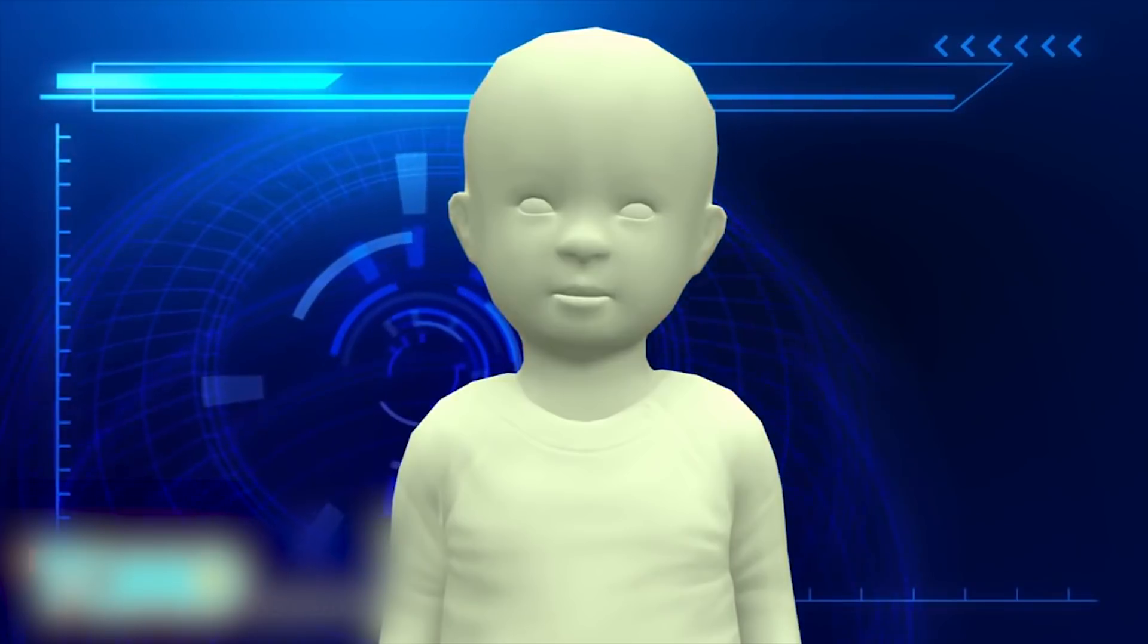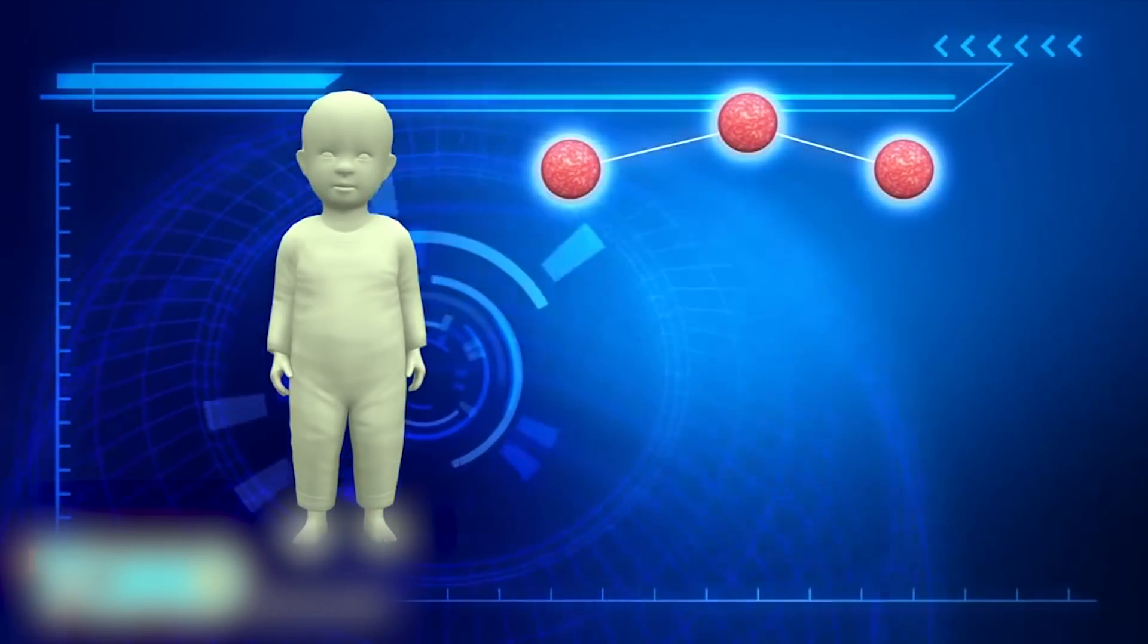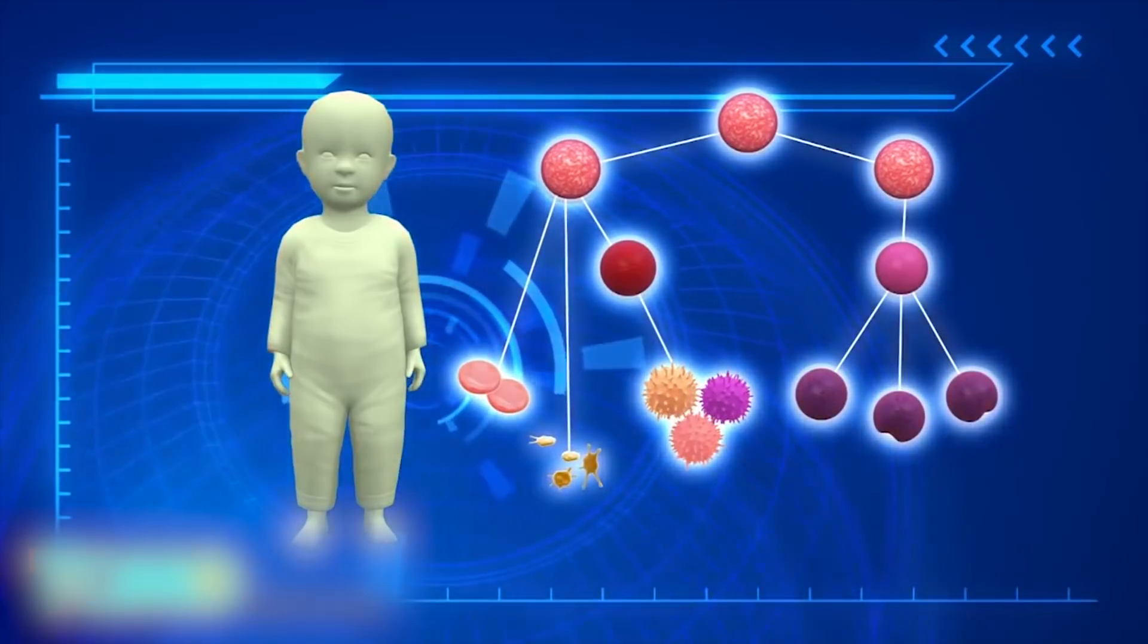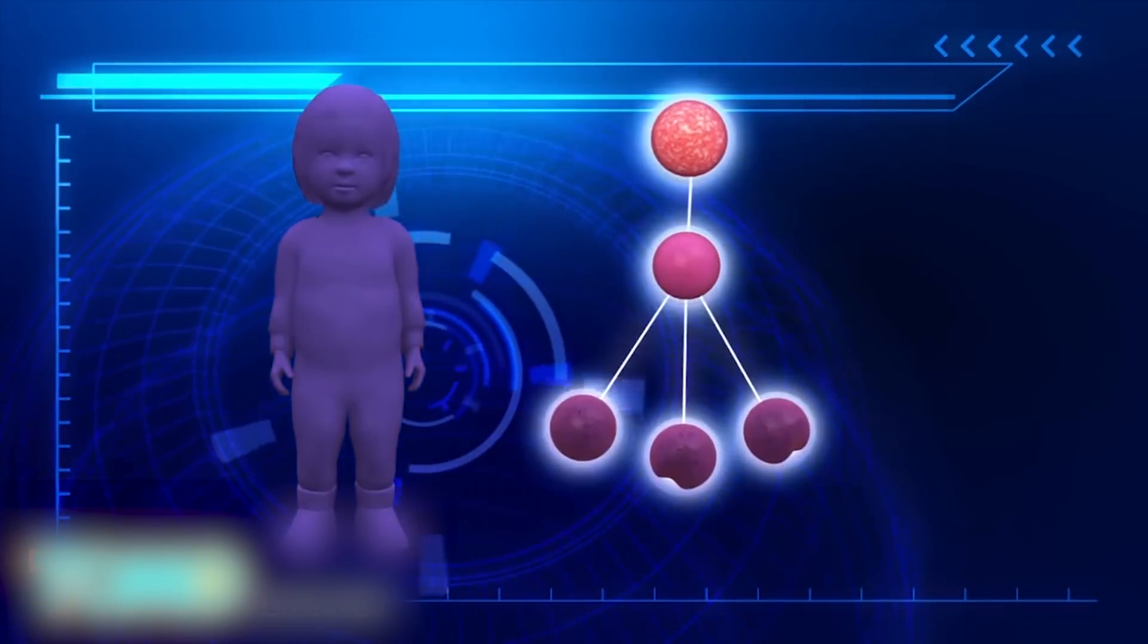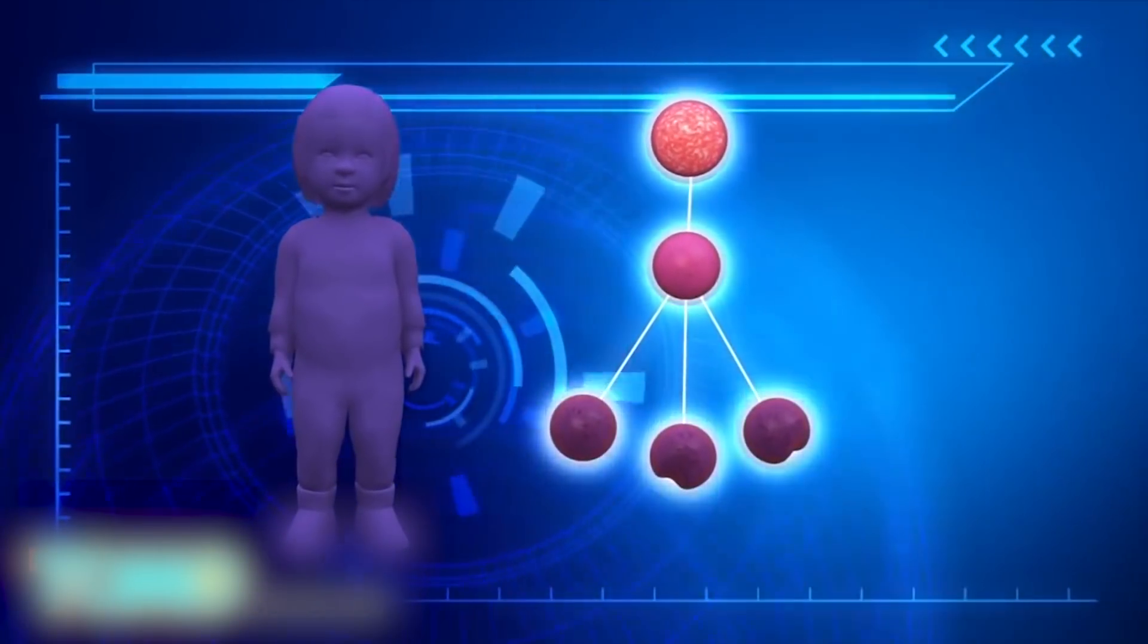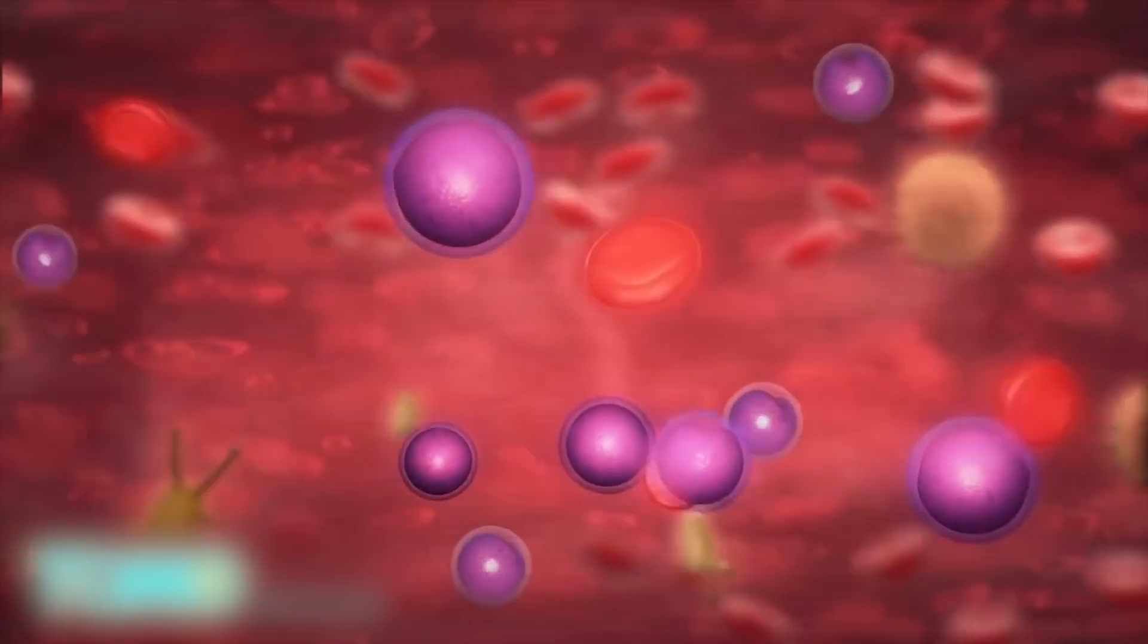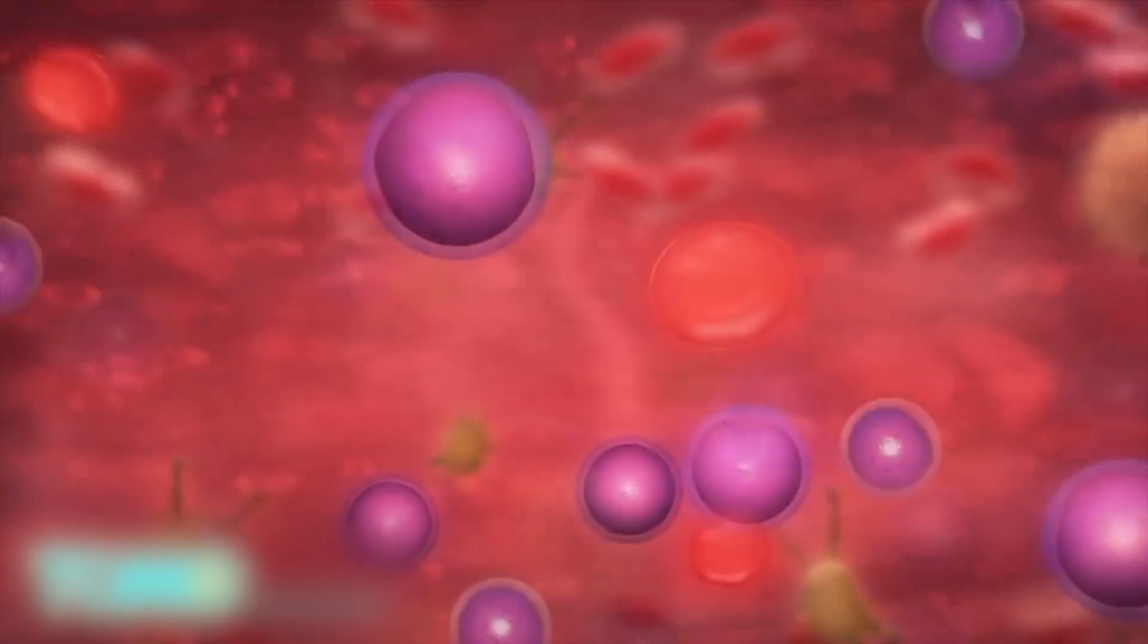In a healthy child, the bone marrow makes blood stem cells that can become myeloid stem cells, or lymphoid stem cells, which then develop into mature red blood cells, platelets, and white blood cells. However, in a child with acute lymphoblastic leukemia, too many stem cells develop into lymphoblasts, B lymphocytes, or T lymphocytes, which are in fact leukemia cells. Leukemia cells are not able to fight infection, and they take up the space for healthy blood cells in the blood and bone marrow. This may lead to infection, anemia, and easy bleeding.